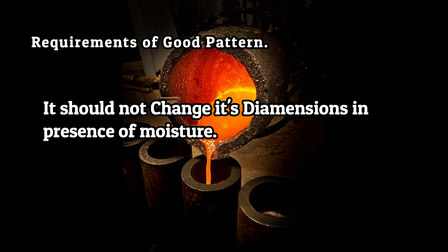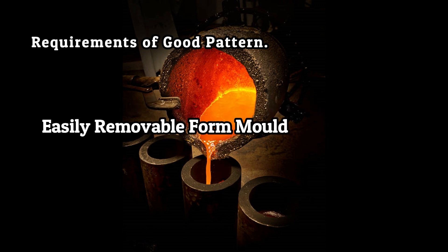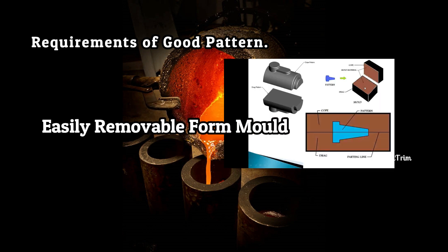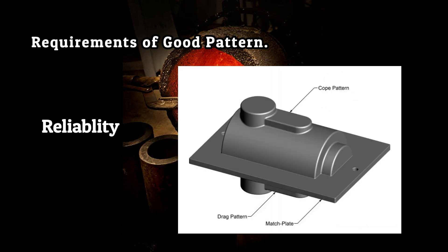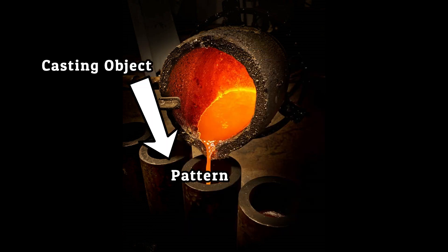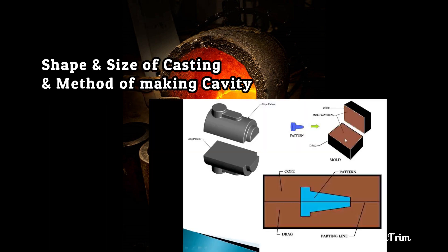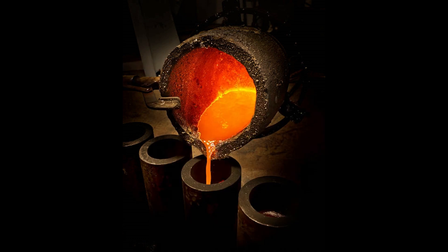It should not change its dimensions in the presence of moisture. It should be easily removable from the mold and should have long life without change in its dimensions. As we have seen, casting objects are highly dependent on patterns. According to the shape and size of casting and method of making cavity, patterns can be classified as follows.